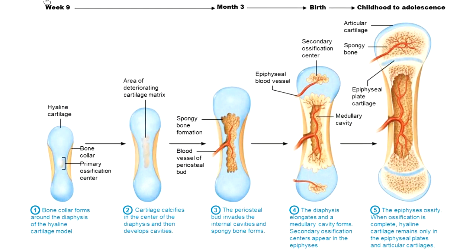When we build bones using endochondral ossification, here's a reminder of what the words mean. Endochondral means we are inside cartilage — remember that 'chondral' part always means cartilage. So endochondral means inside cartilage, and ossification is the process of building bone — bone building.